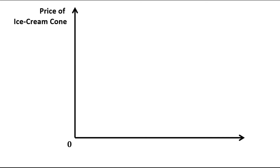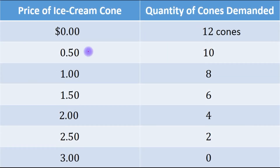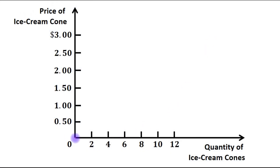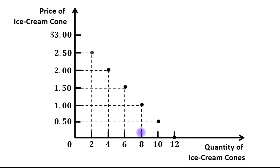Here we have two axes — this is the origin. On the vertical axis we have taken price of ice cream cone, and on the horizontal axis we have taken quantity of ice cream cones. When the price of ice cream cone was $0, quantity of cones demanded is 12 cones — that means this point. And when the price increases to $0.50, quantity of cones demanded reduced to 10 cones — that means this combination. We can plot other combinations in the same way. When the price reaches $3, quantity of cones demanded becomes 0.